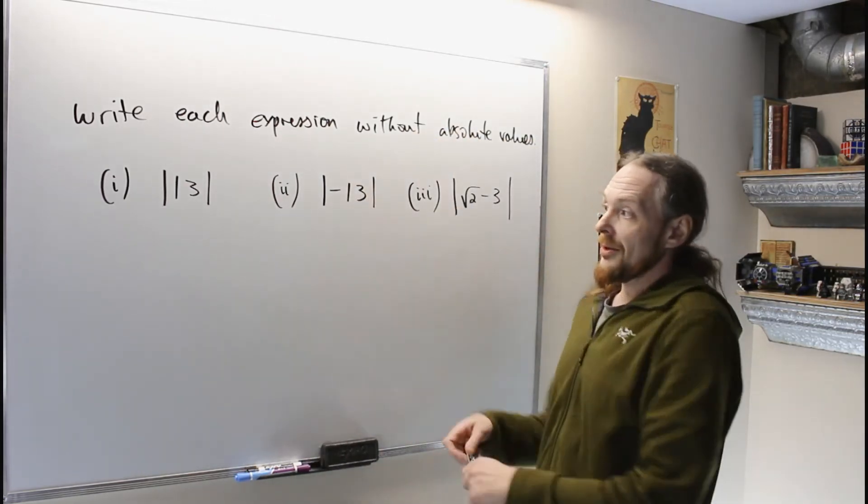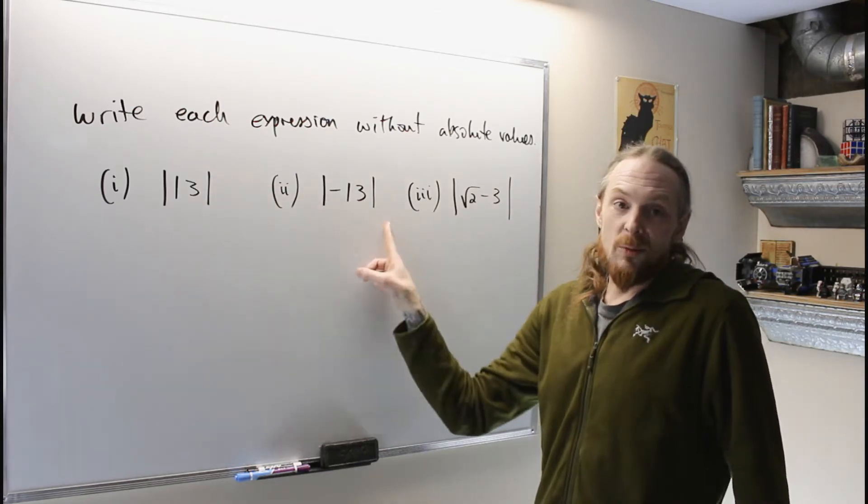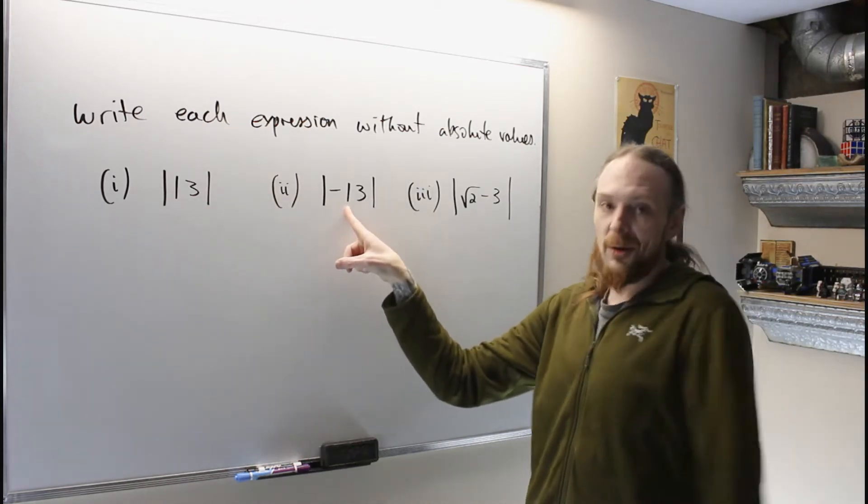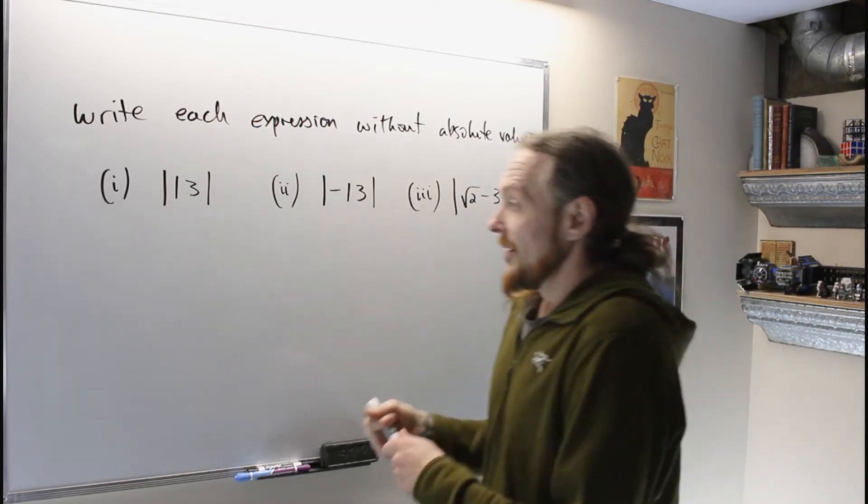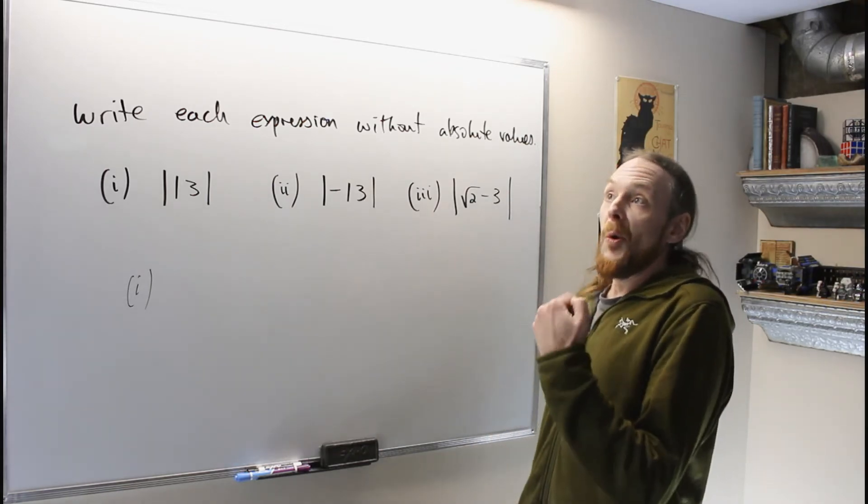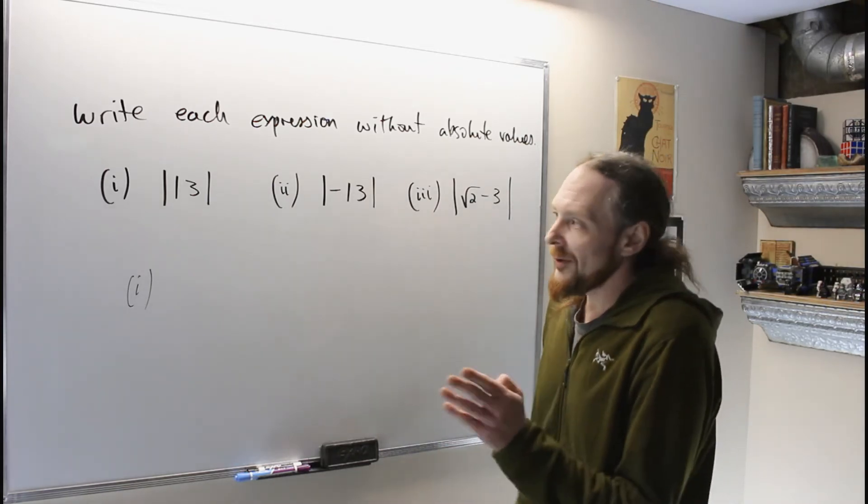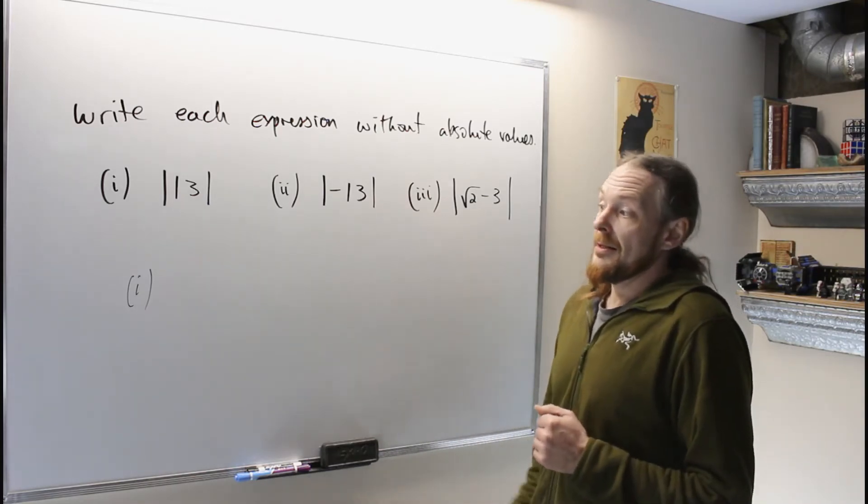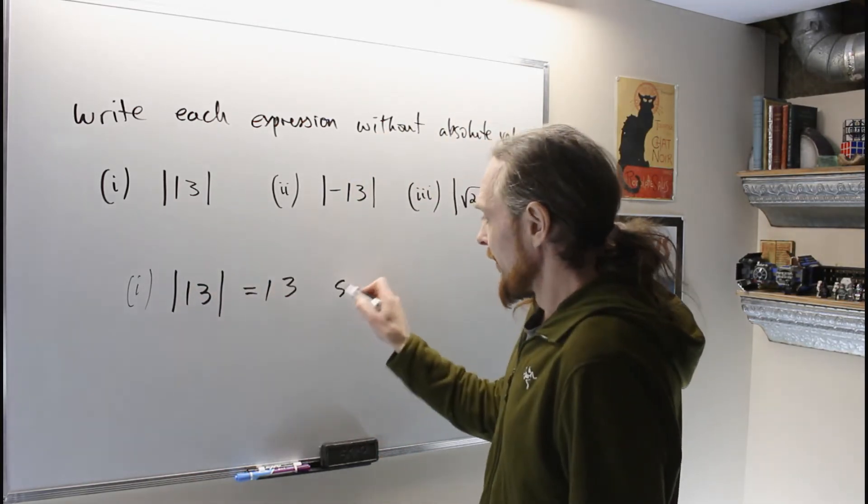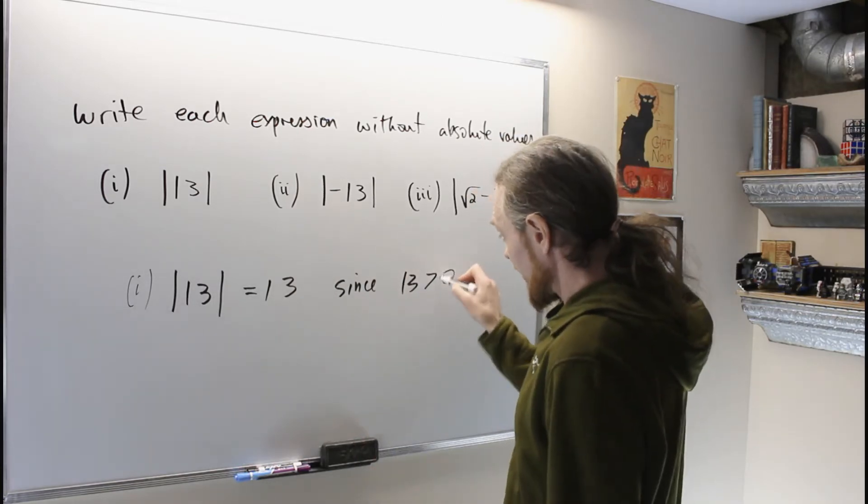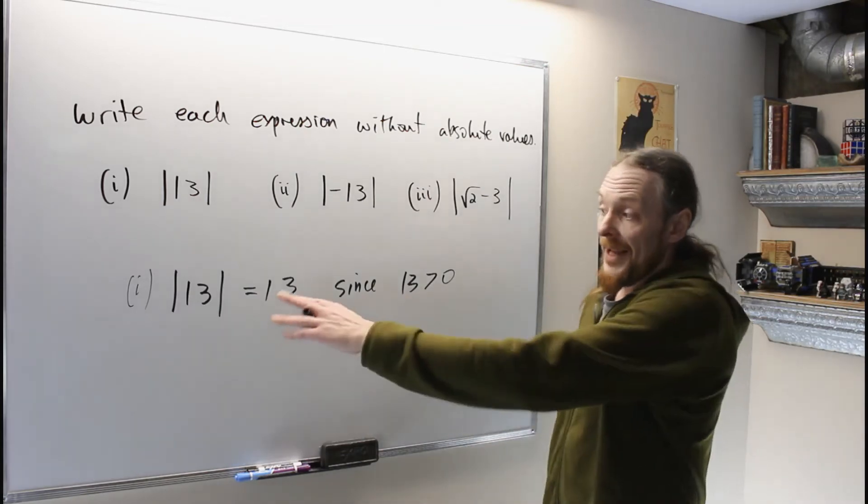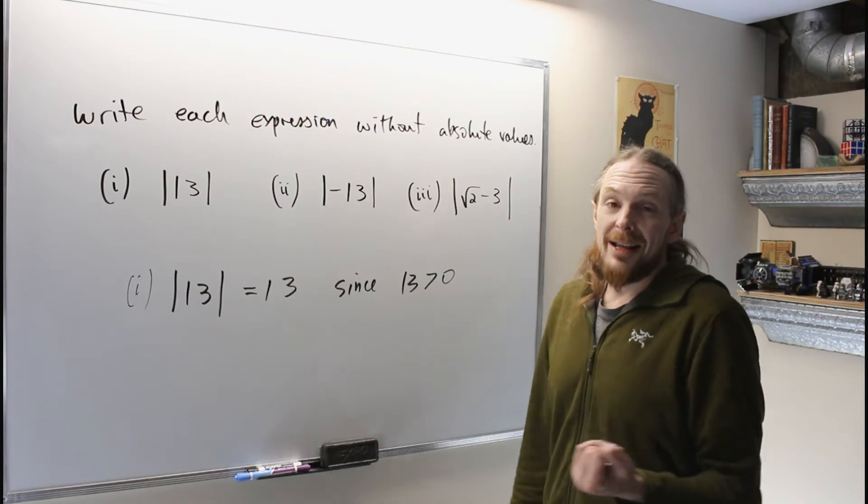These ones are the exact same distance - absolute value is one dimensional distance. This one is 13 units to the left of the origin, this one's 13 units to the right of the origin. So having that in mind, this is just equal to itself since 13 is a positive number. So you can just strip anything that's positive - you're allowed to just strip off the absolute values.